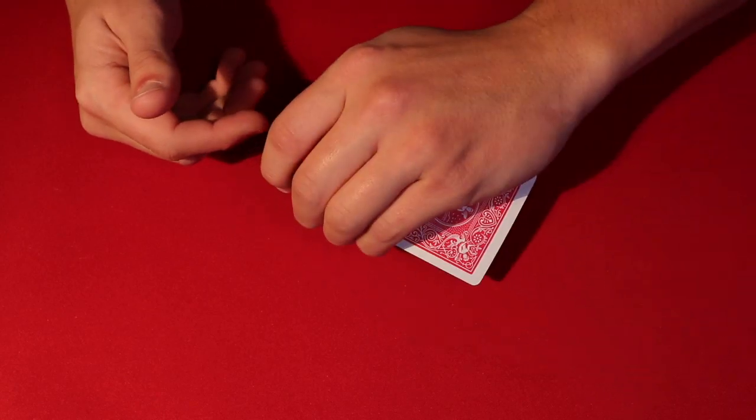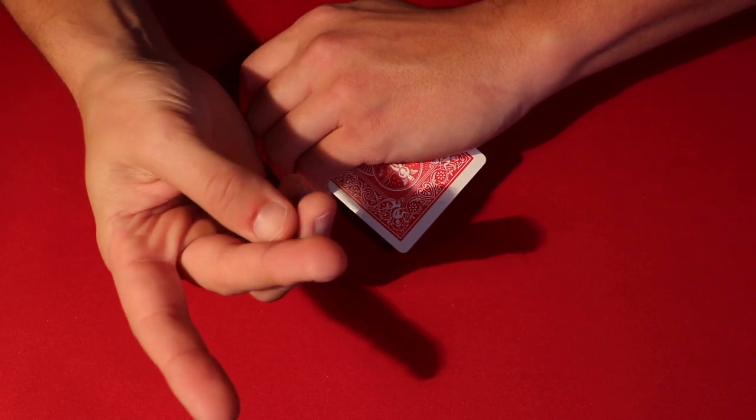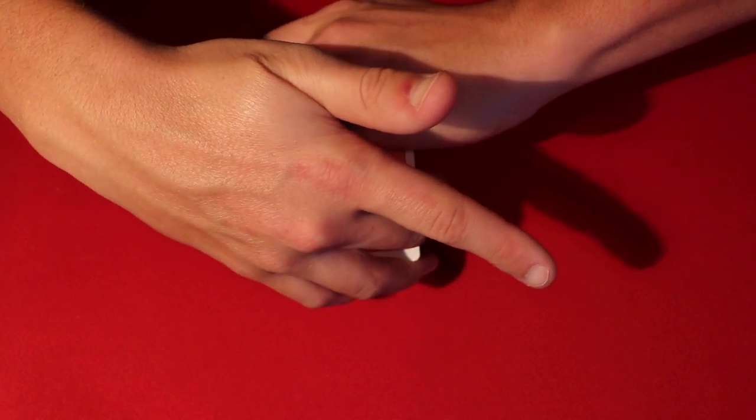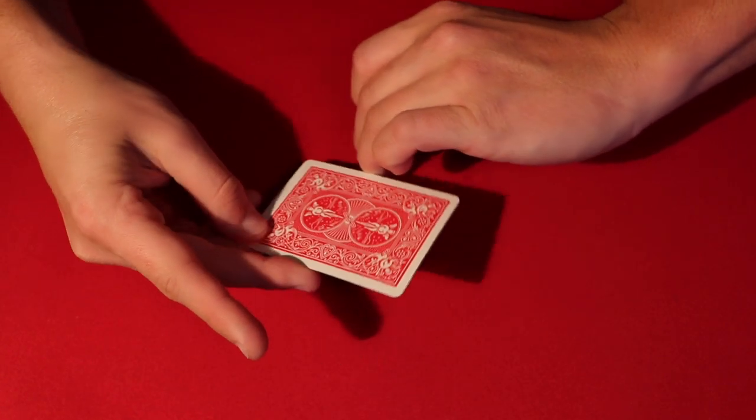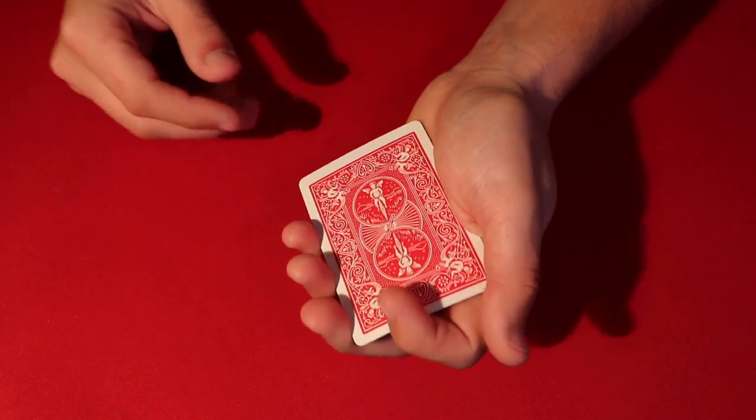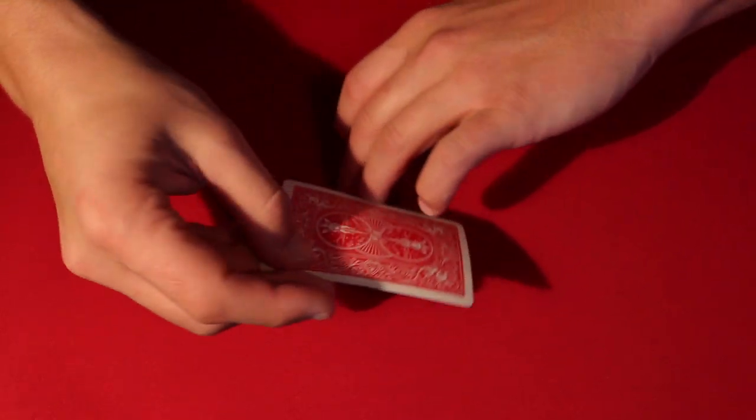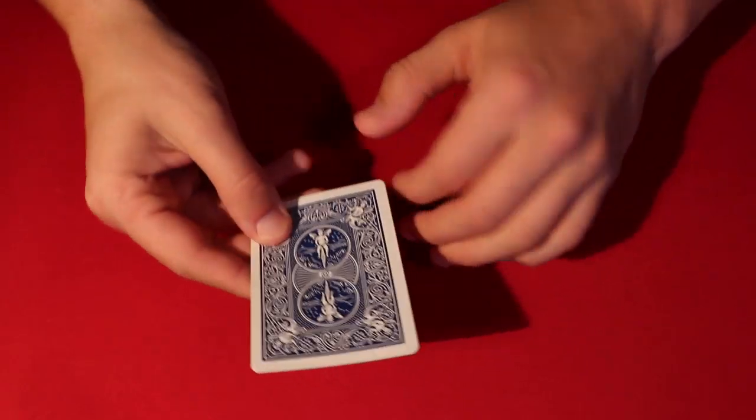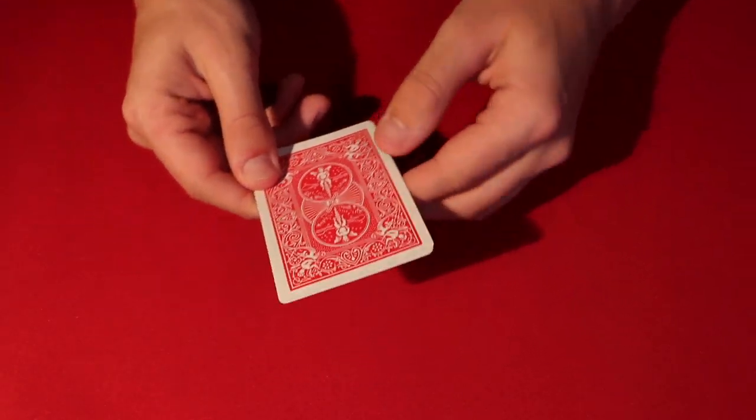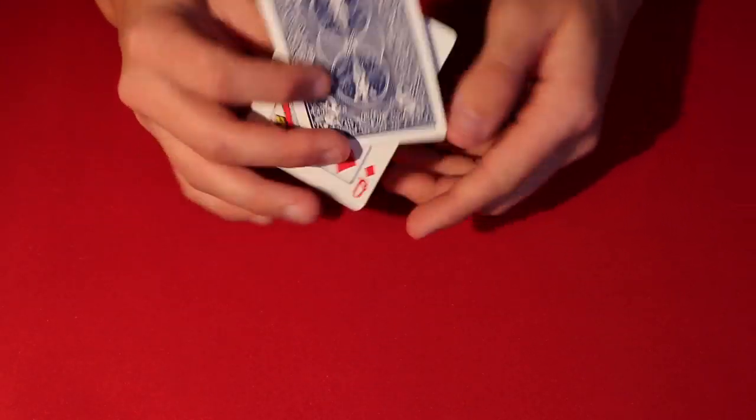And then your middle finger of your opposite hand just kind of swivels the two cards around, and then you catch it. So it's nothing, you're not doing a sleight. It's just a little fancy way of showing the cards to the spectator. So that's up to you what you guys want to do about that.